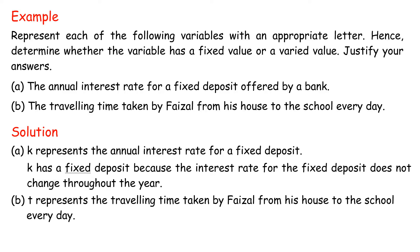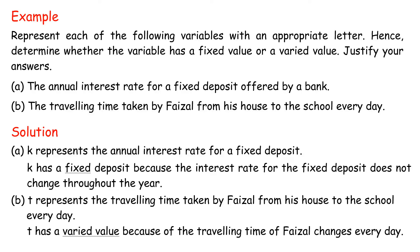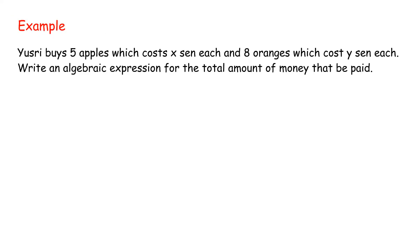T has a varied value because the travelling time of Faisal from his house to school changes every day. Example: Yuzri buys 5 apples which cost X sen each, and 8 oranges which cost Y sen each. Write an algebraic expression for the total amount of money paid.